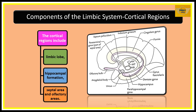We will try to identify these from the picture. The limbic lobe occupies this running area on the medial aspect. The hippocampal formation is identified here in the structure below and part of it above. The septal and olfactory areas are the structures identified here and also here. These regions make up the cortical regions of the limbic system.